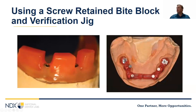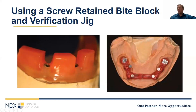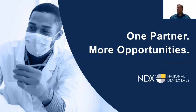After taking your full arch impression, the next appointment will involve a verification jig and usually a screw-retained bite block. Use the bite block as you would with a denture to get the correct lip position, plane of occlusion, and incisal edge. The verification jig ensures the model and the mouth match — screw all temporary cylinders to the MUAs in the mouth, then remove all but one and take a radiograph. It should seat perfectly with only one screw in place. If it doesn't, there's a discrepancy between the model and the mouth — cut the jig, screw all pieces down, and lute it back together. This step is really, really important for a final restoration that fits perfectly. Thank you very much for joining today.